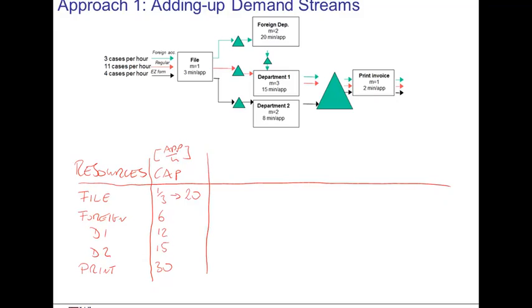Next, we ask ourselves what's the demand for service at each and every one of the five resources. Well, there are three types of demand here: the foreign accounts, the regular accounts, and the easy accounts. Each of these three flow units is contributing to demand at the various resources. If you look at the filing department, we have 3 units of the foreign accounts, 11 units of the regular accounts, and 4 units of the easy accounts contributing to demand. This is equal to a total demand of 3 plus 11 plus 4 equals 18 units per hour.